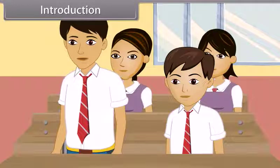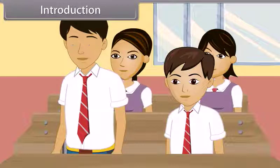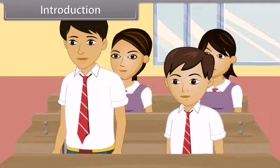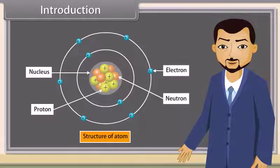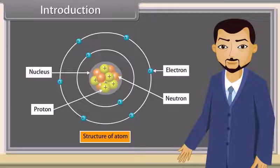A student asks: all objects around us are made up of different materials, so how is it possible that atoms are the fundamental unit of matter? Good question, Rakesh. As you know, all objects are made up of different materials like plastic, rubber, iron, etc. They have different arrangements and types of molecules. And a molecule is a group of two or more atoms. So the fundamental unit is atom. So students, let us discover more about atoms.